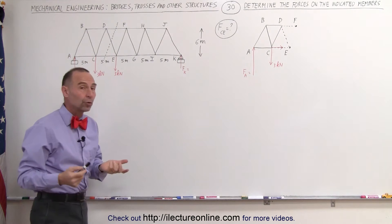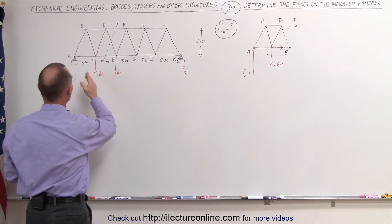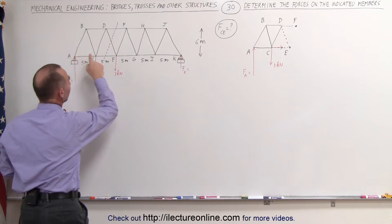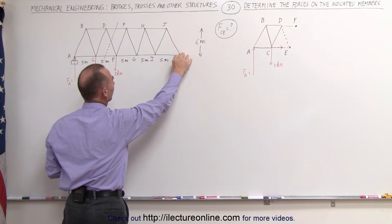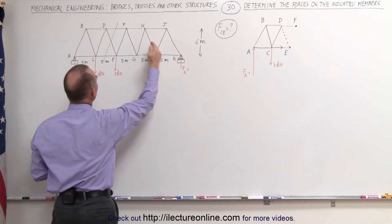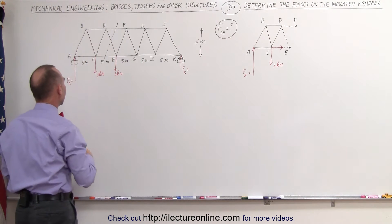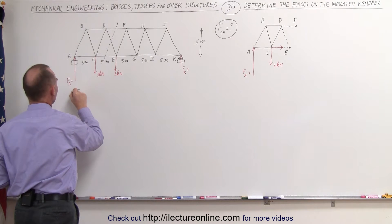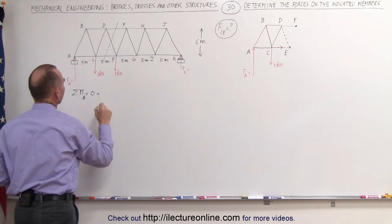For that, we're going to use the sum of the moments about a particular point. We can start at A, then calculate the force at K by using the rotational point at K, and find the force at A. So let's start: the sum of the moments about point A is equal to zero.